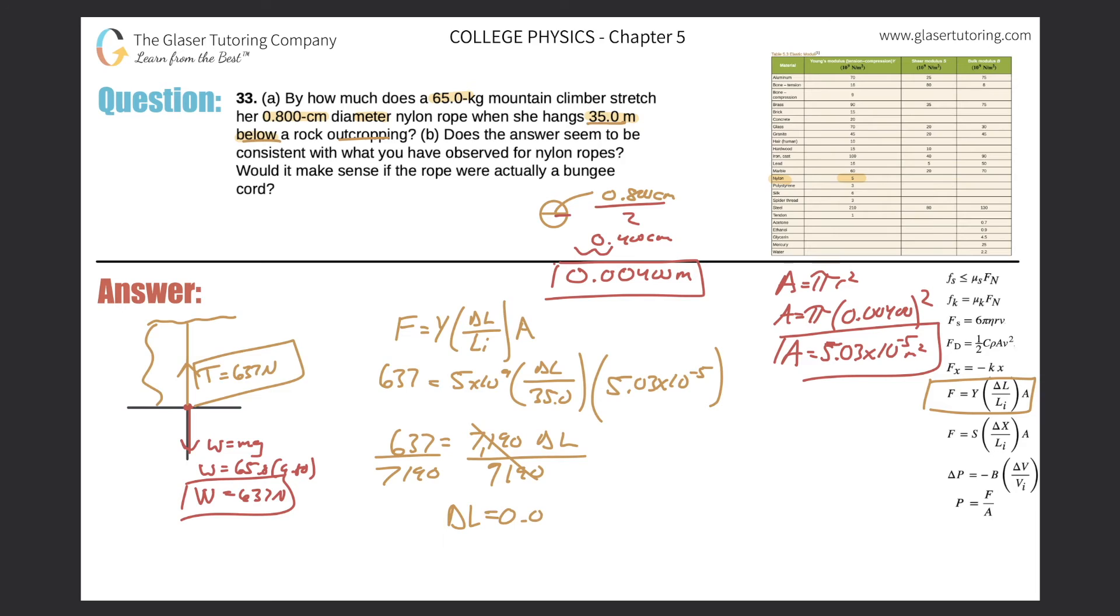So now we get a value of 0.0886 meters. In other words, I move the decimal two places over—this would be 8.86 centimeters. That's how much it changes by.